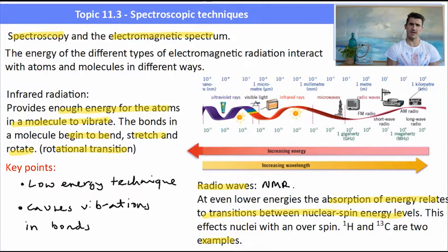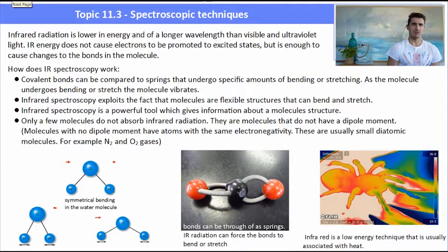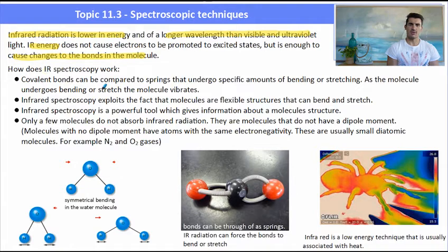So infrared radiation. It has a longer wavelength than visible light, so it has less energy. IR does not have enough energy to cause electrons to be promoted to excited states. It's just enough to change the bonds in the molecule. So think of covalent bonds like springs. And those springs, if you put in the right amount of energy, can undergo certain amounts of stretching and bending. Infrared spectroscopy uses the fact that molecules are flexible, and that they can bend and stretch depending upon the energy we give them.